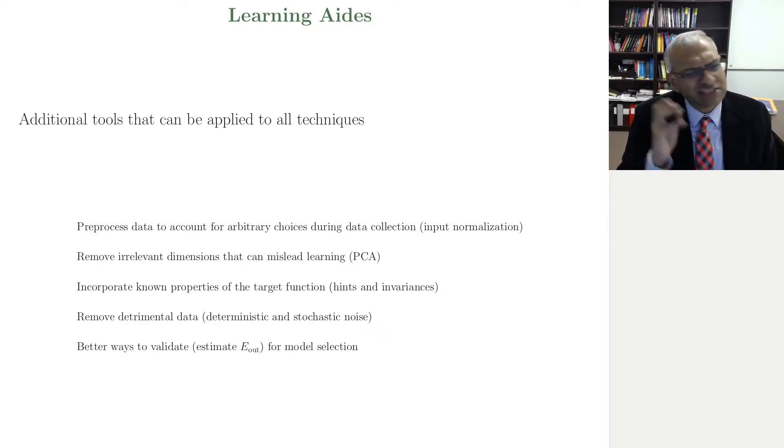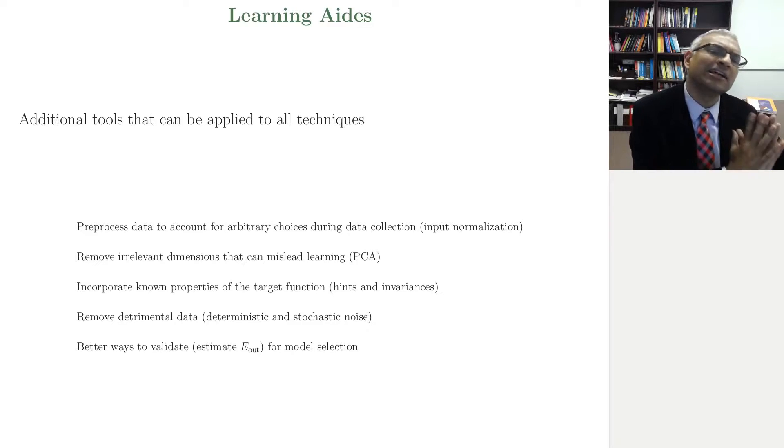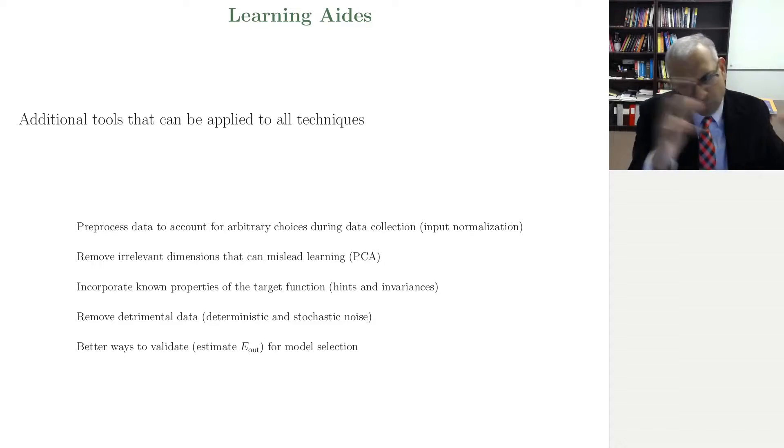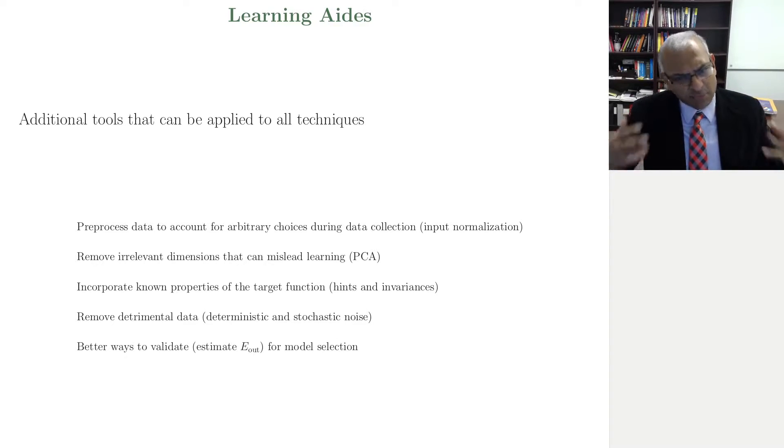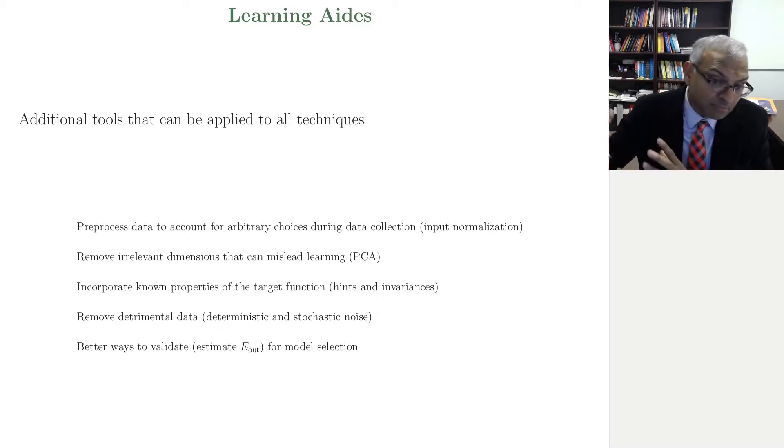Learning aids are additional tools, techniques that can be applied to all learning models that we have learned: linear models, RBF networks, support vector machines, neural networks, and whatever your favorite learning model is. You could use learning aids to help the performance. They're relatively easy to implement, there's almost no downside, and so you can use these techniques in practice to significantly improve, and in some cases take a method that wouldn't work into a method that will work.